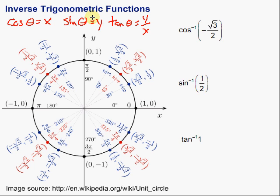We can use those to help us find those inverse trigonometric relations. For example, the inverse cosine of negative square root of 3 over 2. What we're going to want to do is remember that the cosine is the x value from these ordered pairs that we see going around the unit circle. So I'm going to look through the x values and see if I can find negative square root of 3 over 2.